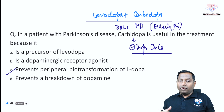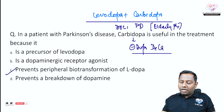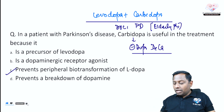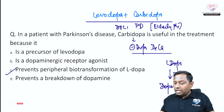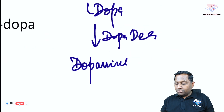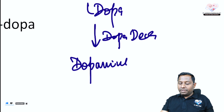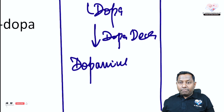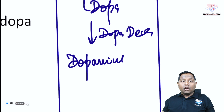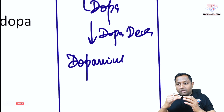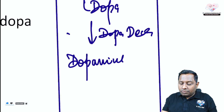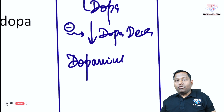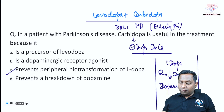So carbidopa does not prevent the breakdown of dopamine — it prevents the peripheral biotransformation of levodopa to dopamine. The conversion of levodopa to dopamine is mediated by the enzyme dopa decarboxylase, which is present both in the brain and in the periphery. We want to inhibit peripheral conversion only, allowing more levodopa to reach the brain. Carbidopa inhibits peripheral dopa decarboxylase — so C is the correct answer.